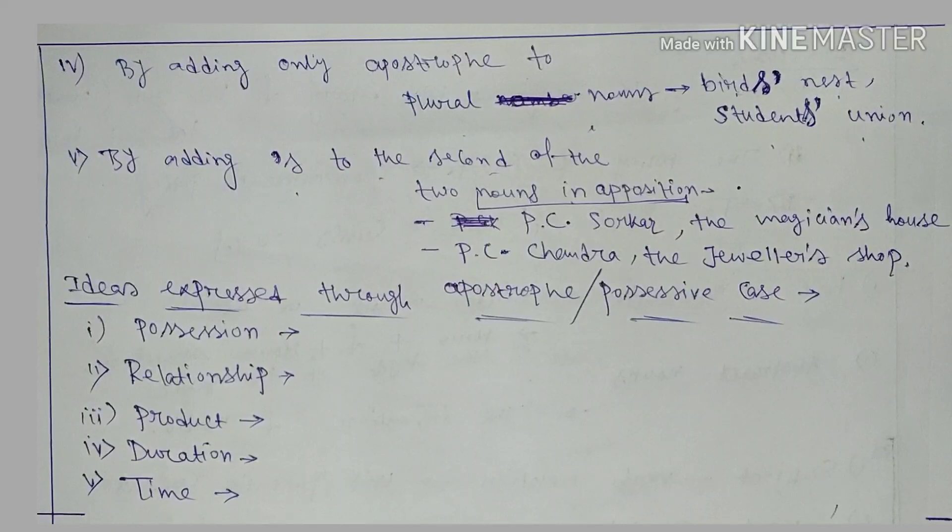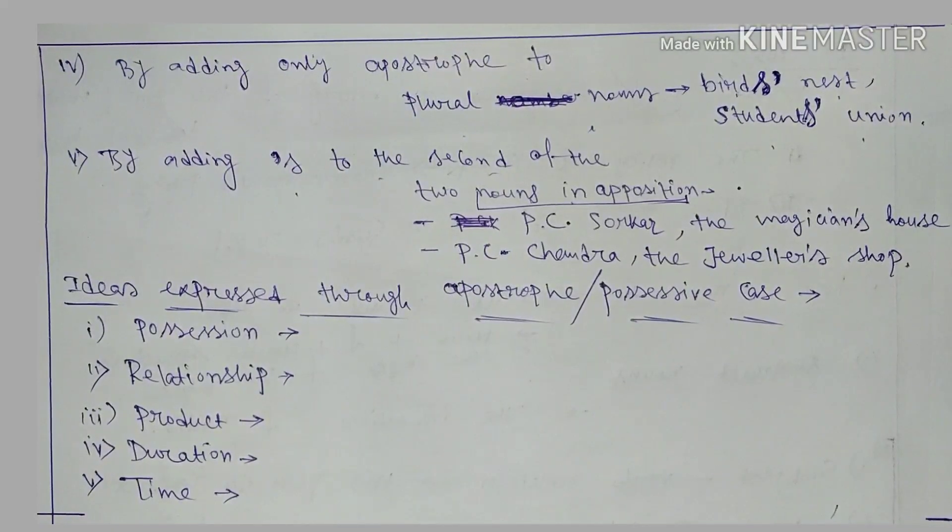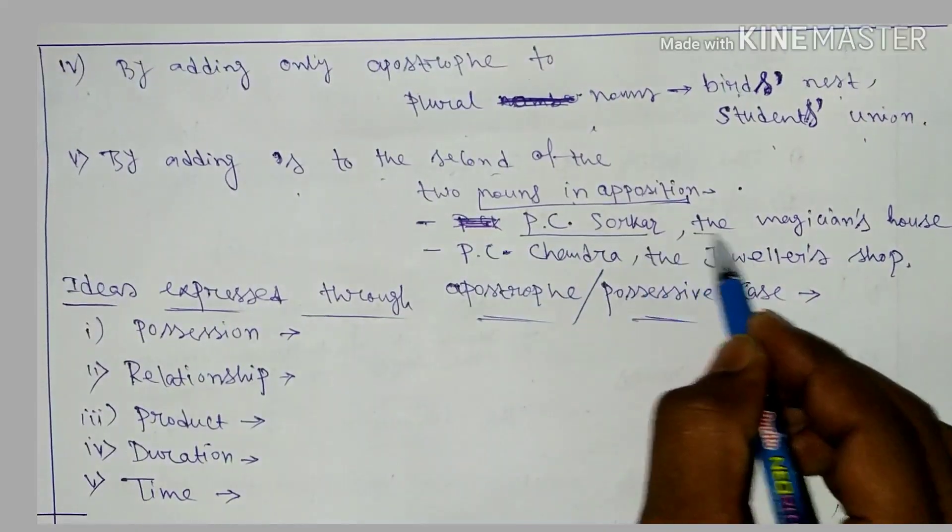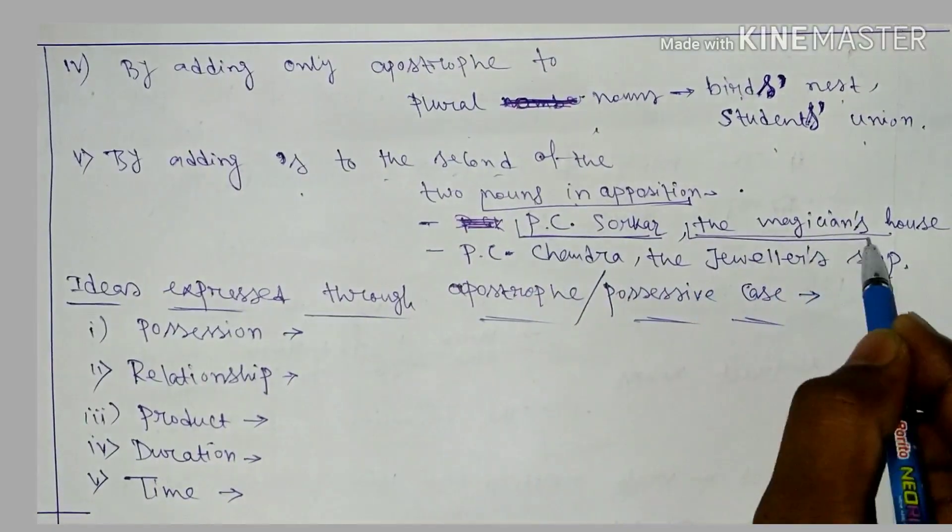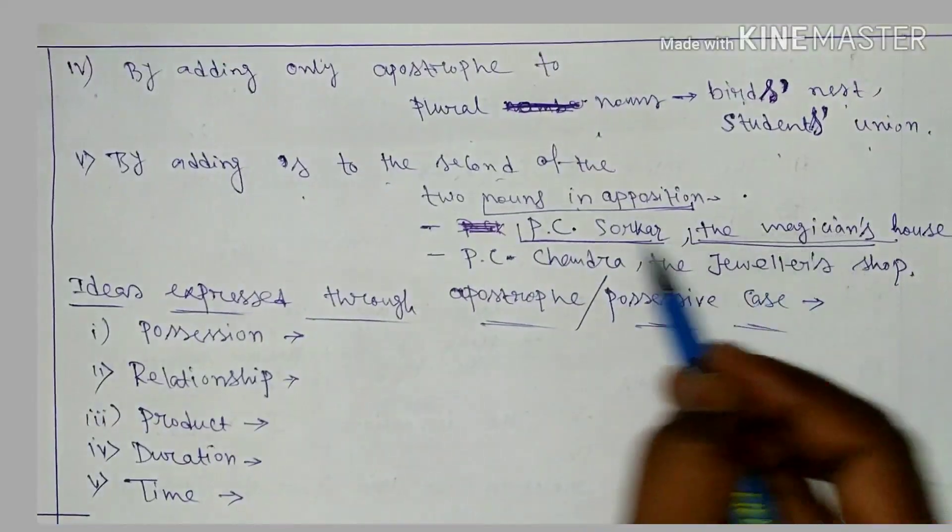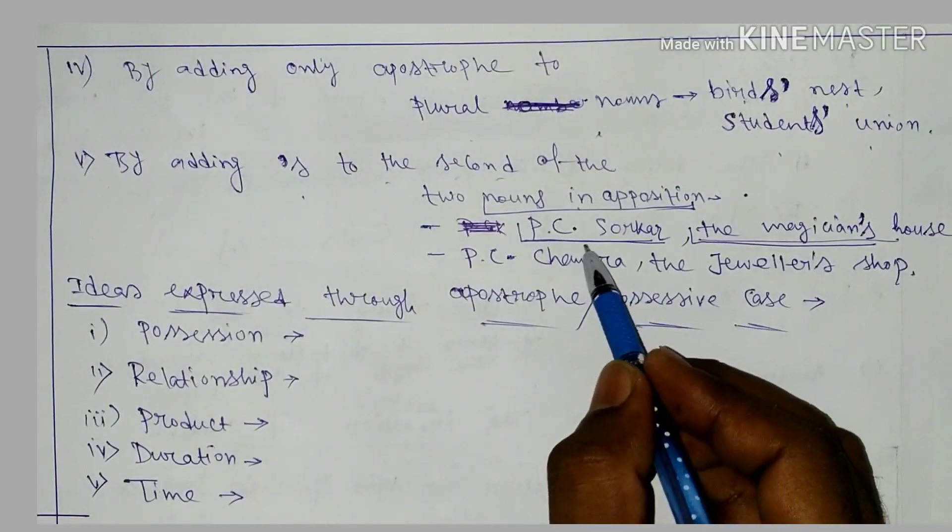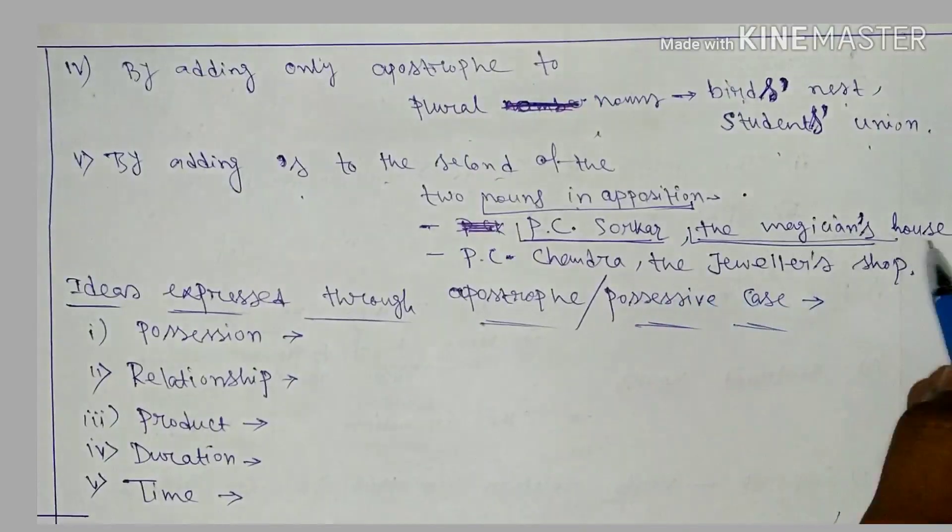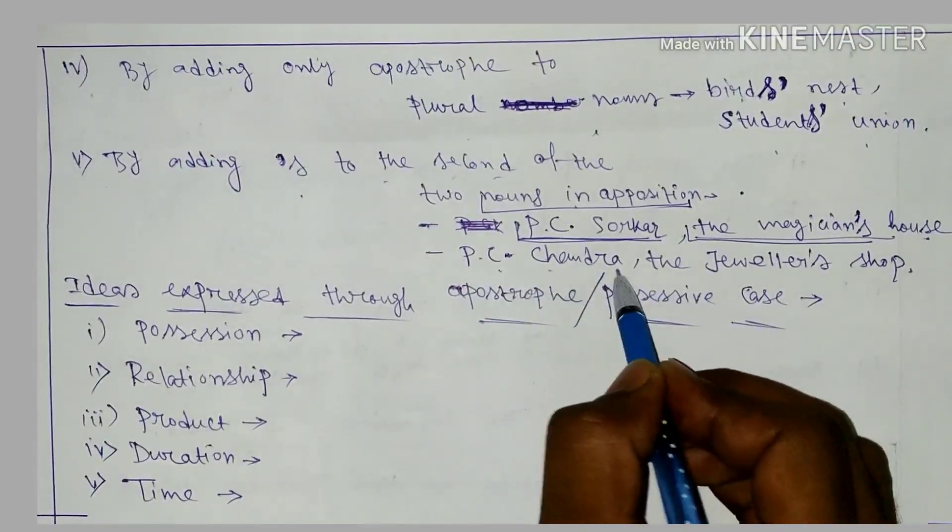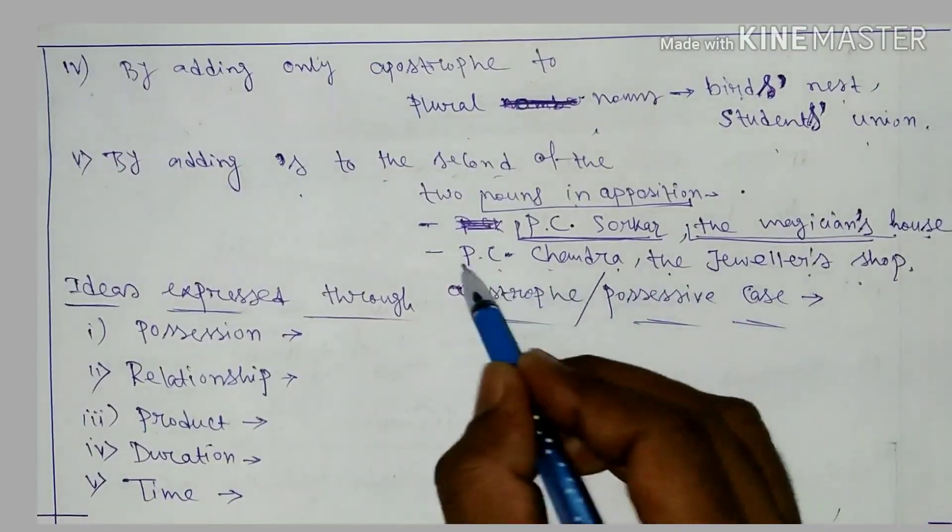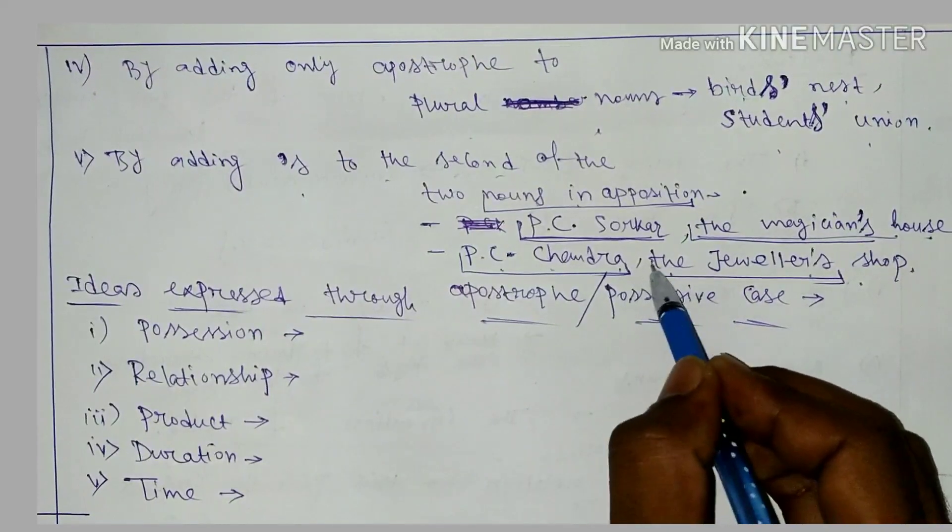Nouns in apposition means when two or more noun phrases occur next to each other and refer to the same person or thing. Like P.C. Sarkar the magician's house. P.C. Sarkar and magician are the same person, so this is noun in apposition. When we use apostrophe s, we add it to the second noun, followed by the word, like the magician's house. Next is P.C. Chandra the jeweller's shop. P.C. Chandra and jeweller refer to the same person, so we add apostrophe s to the second one.